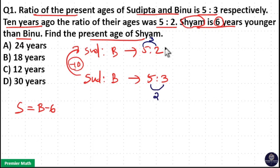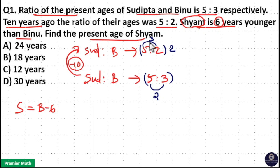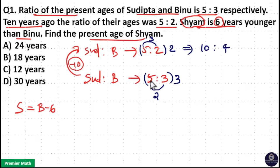Now, multiply the above ratio with the below difference — that is 5:2 multiplied by 2. And multiply the below ratio with the above difference — multiply 5:3 by 3. This gives: 5×2=10, 2×2=4, 5×3=15, and 3×3=9.